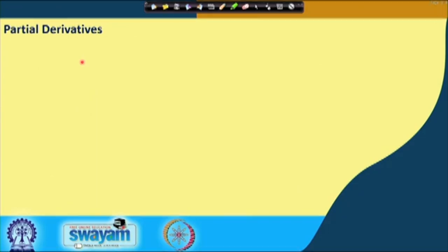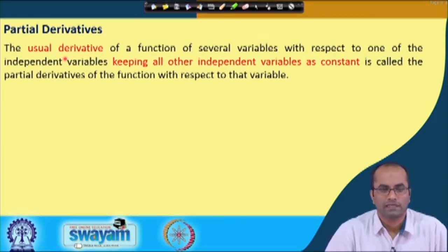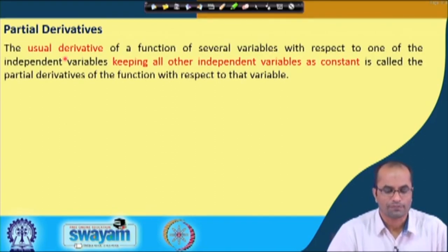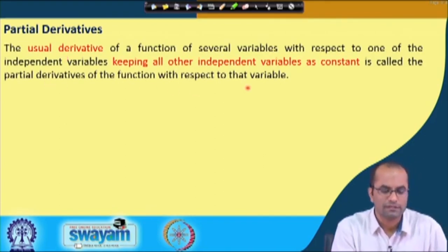What is a partial derivative? It is the usual derivative of a function of several variables with respect to one of the independent variables, while keeping all other independent variables constant. We take the derivative with respect to one particular variable, and this is called the partial derivative with respect to that variable.